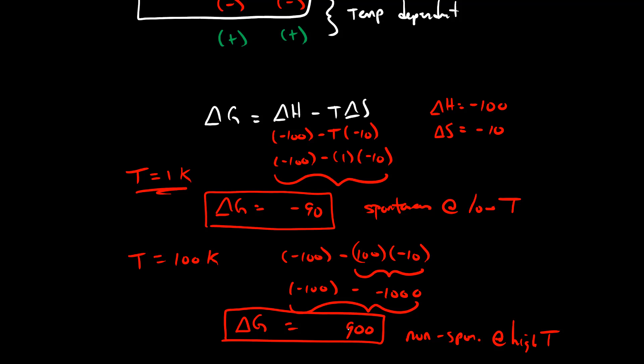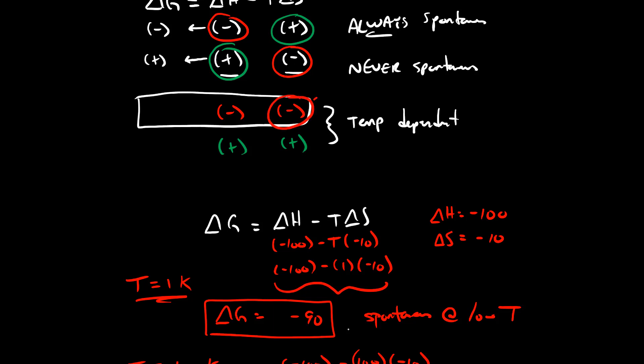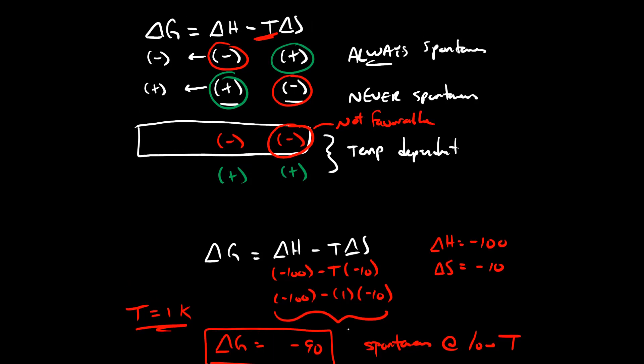When the sign of delta H and delta S agree and are both negative, the reaction is only spontaneous at low temperatures. The reason is that the entropy term is not favorable. The higher the temperature, the more weight this unfavorable entropy term gets — it becomes bigger and bigger until it overcomes the enthalpy and the reaction becomes non-spontaneous.